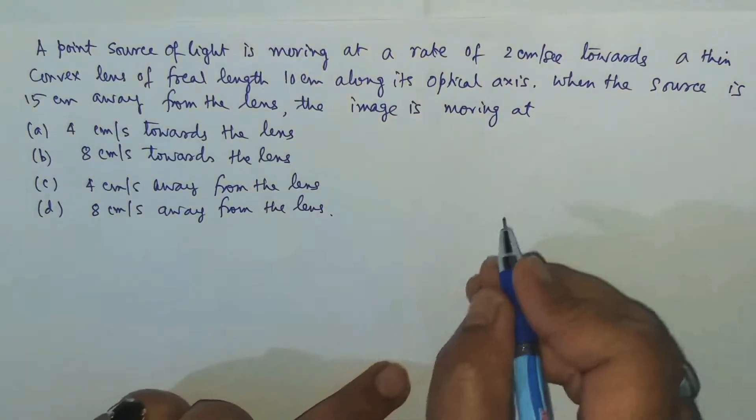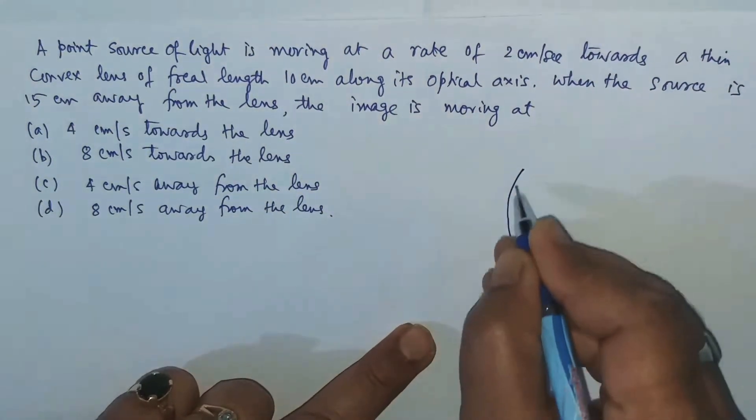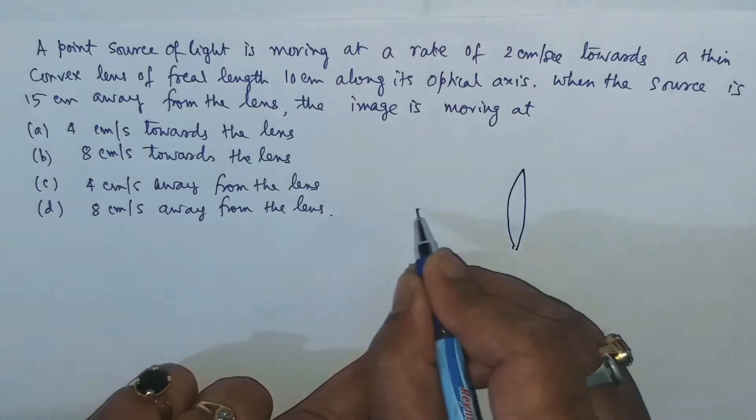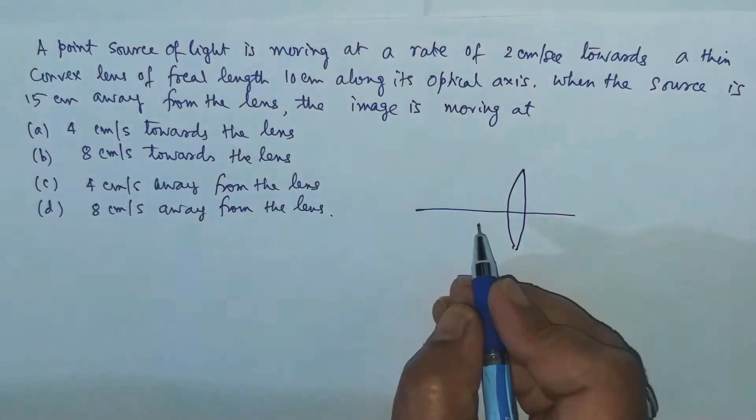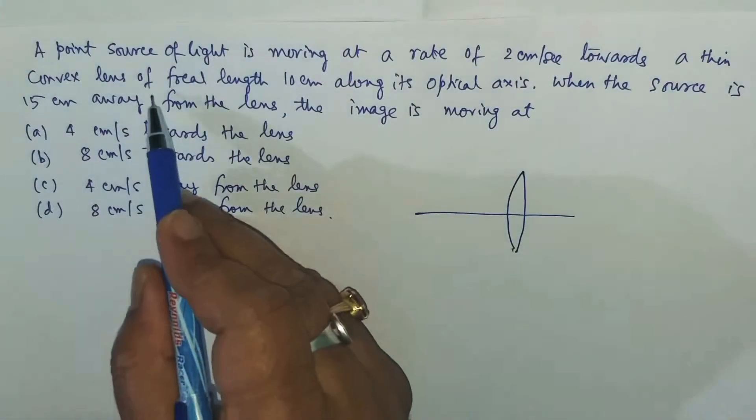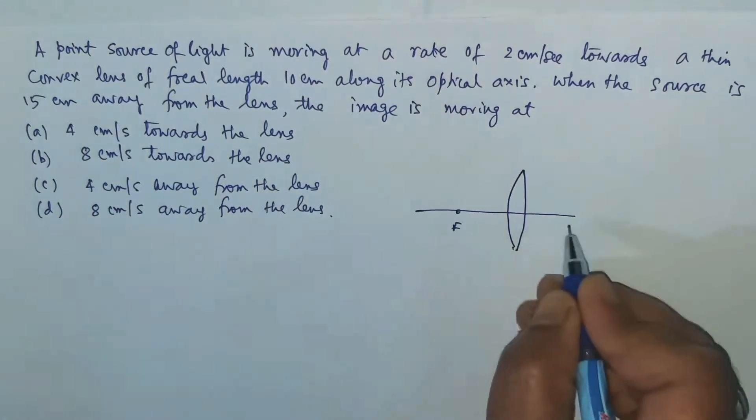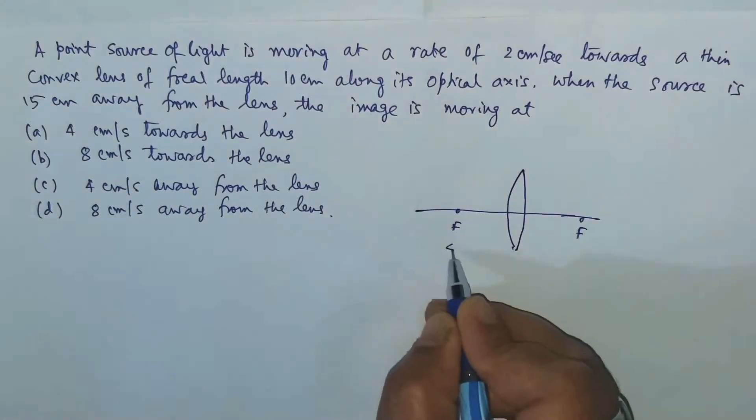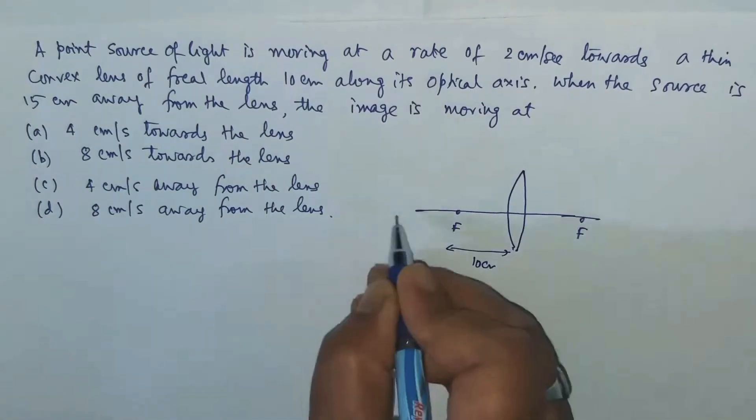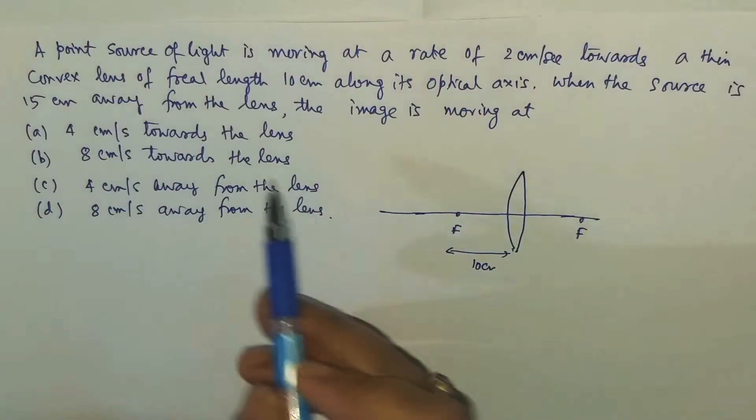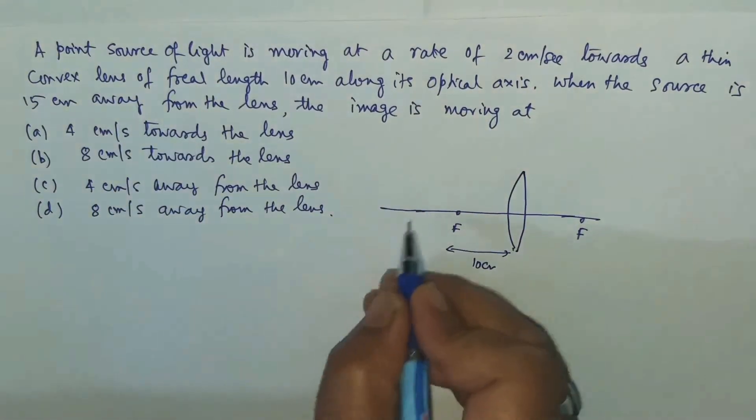I suggest that you draw a rough figure. See, where is the focus? The focal length is 10 cm, so let's say this is focus on either side, you can make this is 10 cm. And where is the object? The object is 15 cm away.